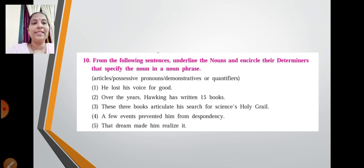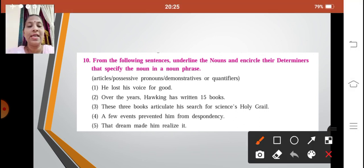Next, going ahead. From the following sentences, underline the nouns and encircle their determiners that specify the noun in a noun phrase. Determiners can be articles, possessive pronouns, demonstratives, or quantifiers. So let's see what are the determiners over here and the nouns which they specify. First one: he lost his voice for good. So we have to underline the noun and encircle the determiner. So which is the noun over here? The noun is voice. And which is the determiner which is specifying the noun? It is his.